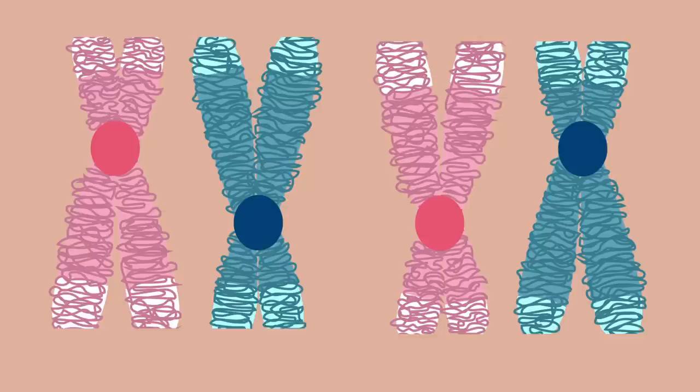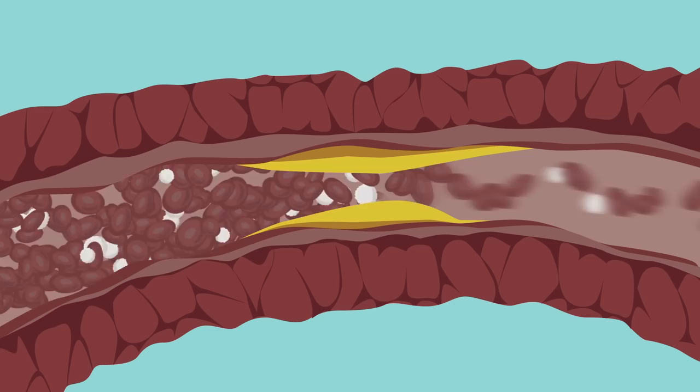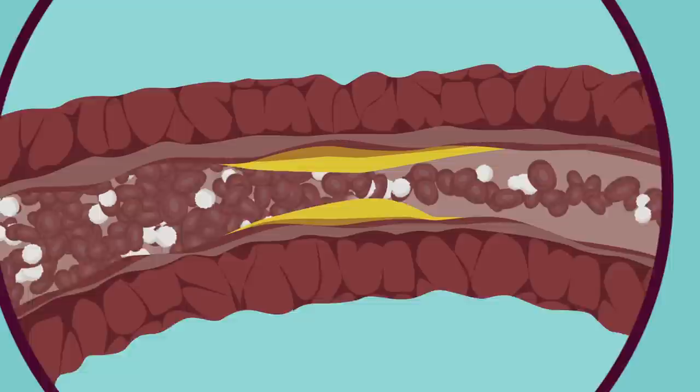Time also gradually shortens the telomeres that act as protective caps for our DNA containing chromosomes. These and other changes make our bodies less and less able to deal with stresses from inside and outside of our body, so when damage reaches a critical level, our cells, tissues and organs may no longer perform normally and our health starts to decline.